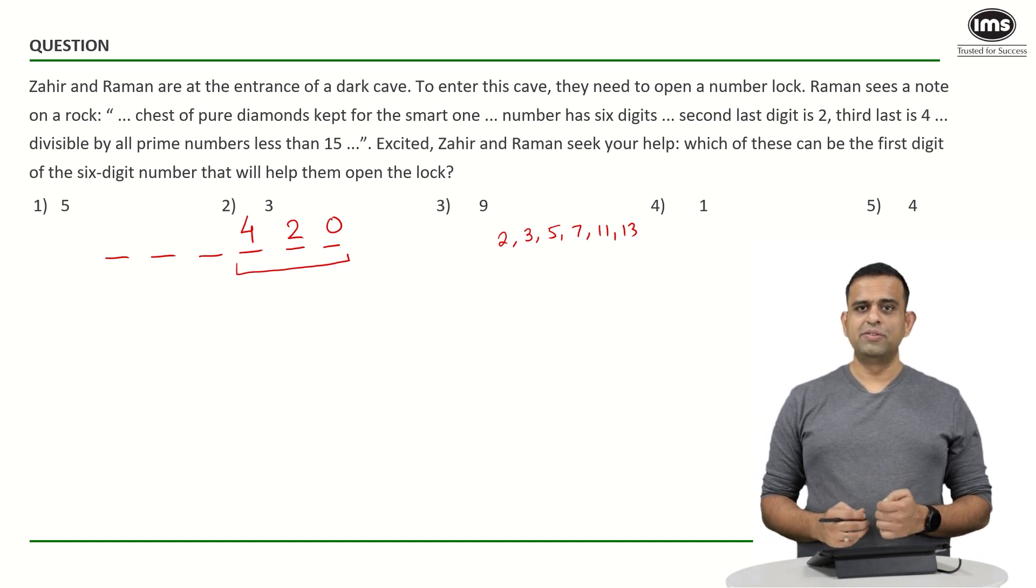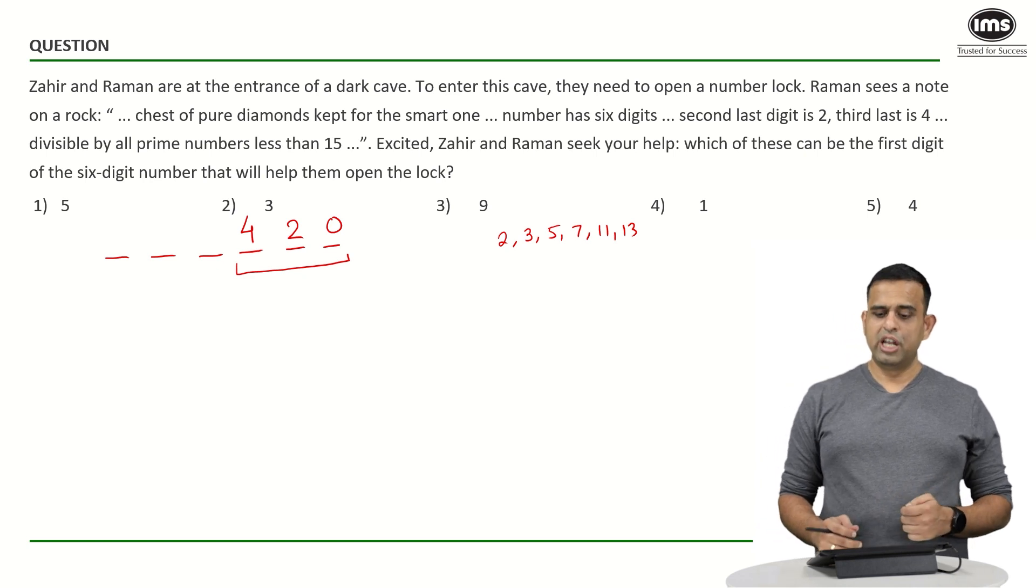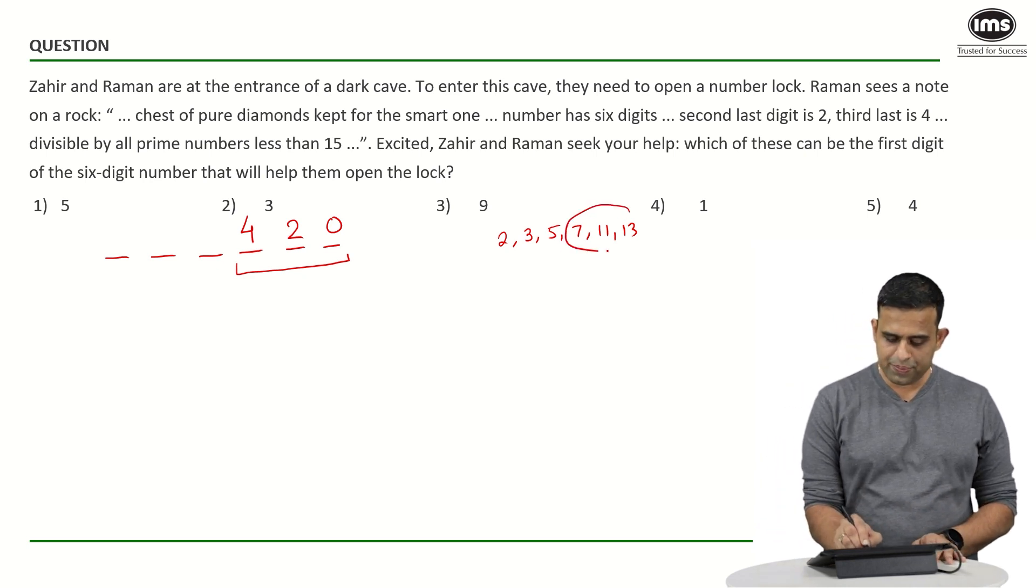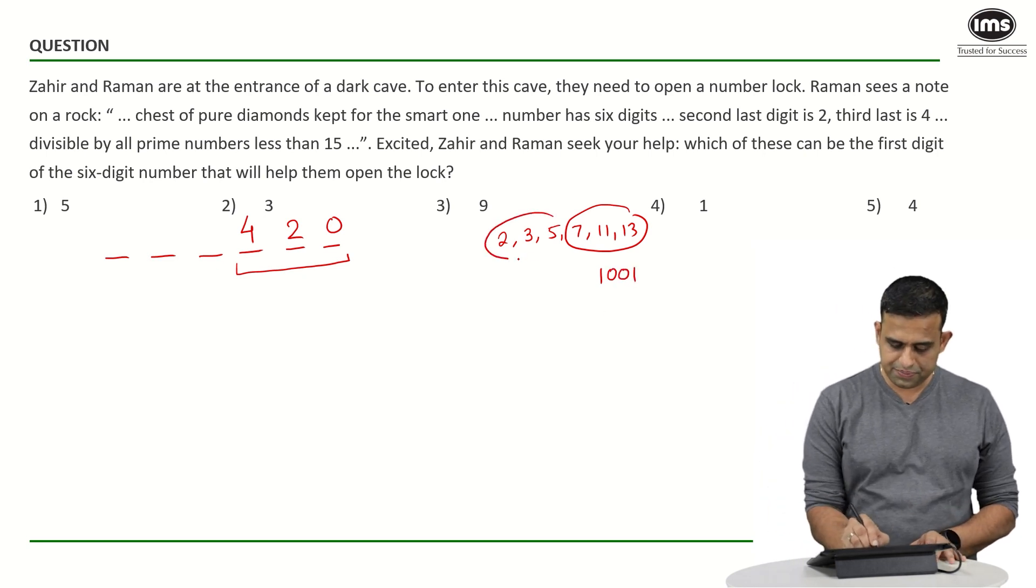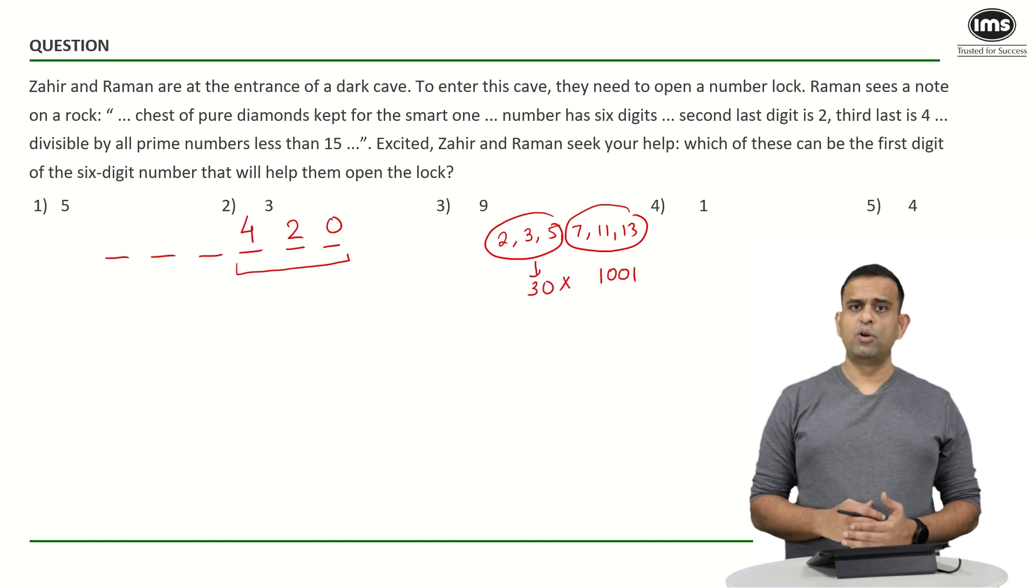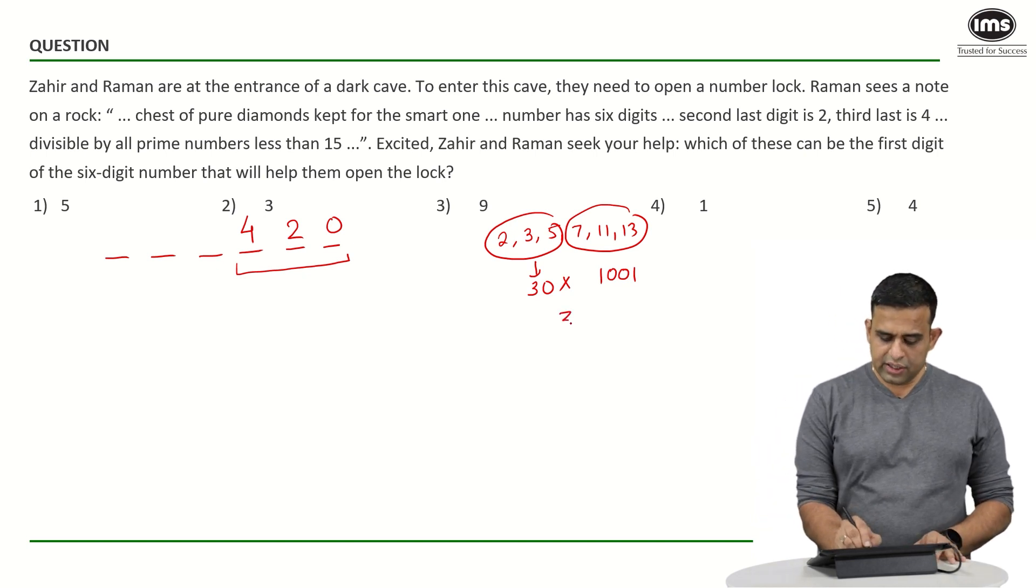Now I hope people know this that the number 7 times 11 times 13 is always a multiple of 1001. The number 2, 3, 5 are also a multiple of 30. So can I say that the number has to be a multiple of 30 times 1001 or one can say 30030.